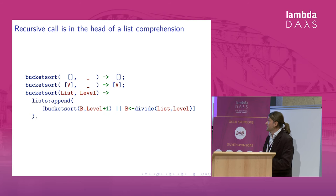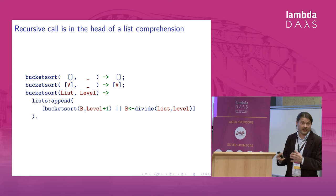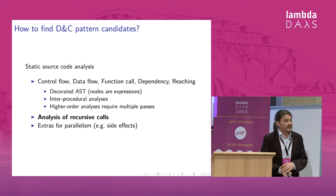You can write it more nicely, but the story is again the same. Bucket sort calls itself in the head of a list comprehension. Again, it calls itself multiple times with independent inputs. So this is the structure we would like to identify in the source code, in Erlang source code, using static source code analysis.